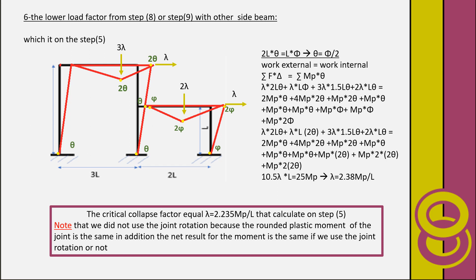In the end, the critical collapse factor equals lambda = 2.235 Mb over L, calculated in step five. Note that we did not use the joint rotation mechanism because the plastic moment at the joint is the same on both sides, and the net result of the moment is the same whether we use the joint rotation mechanism or not.